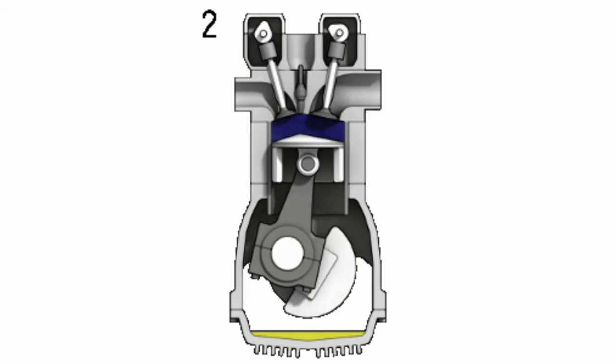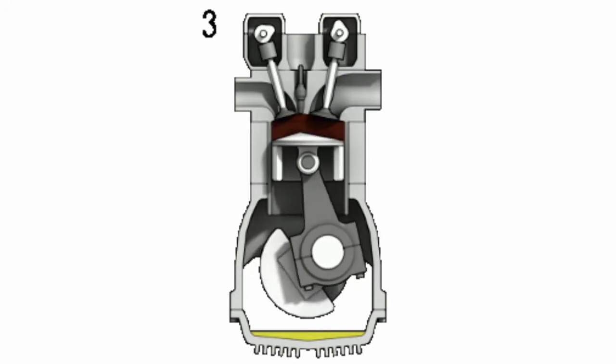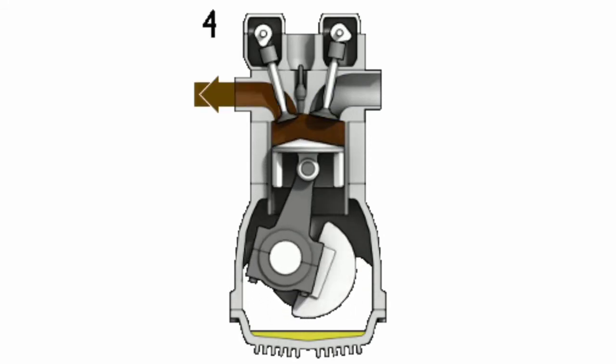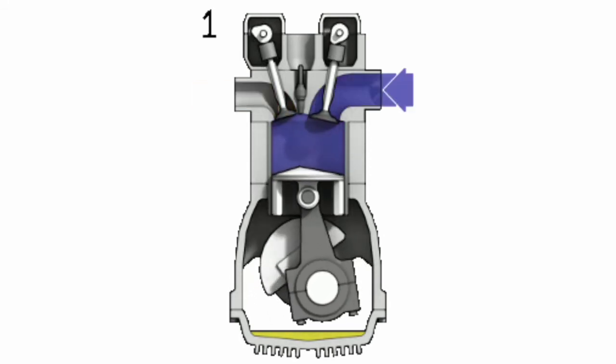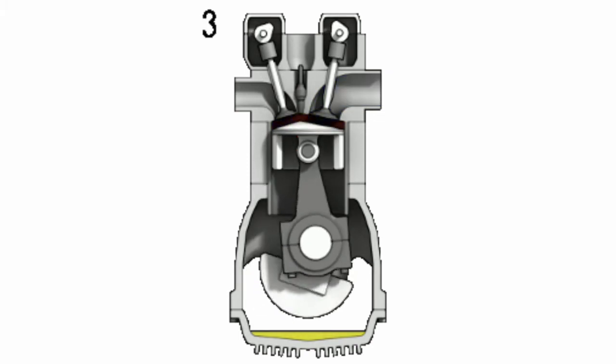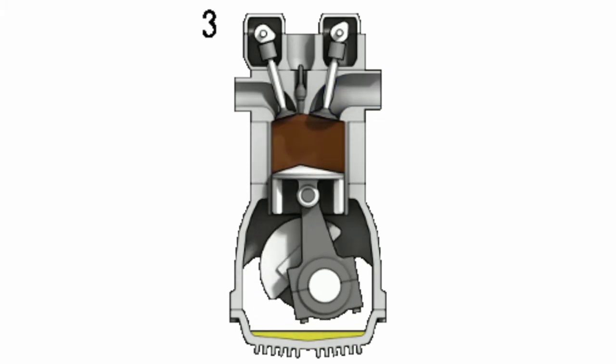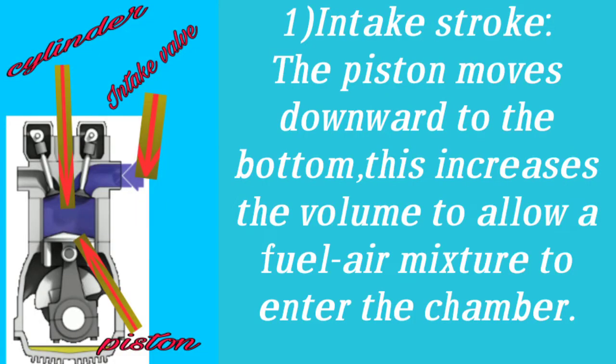Just observe the four strokes — I will explain each and every stroke clearly. Stroke number one is the intake stroke. The piston moves downwards to the bottom. This increases the volume to allow a fuel-air mixture to enter the chamber.